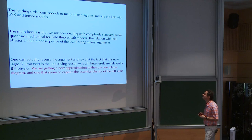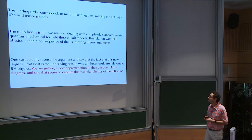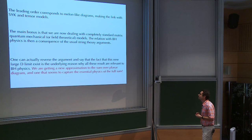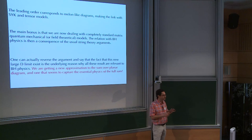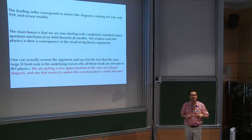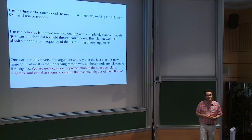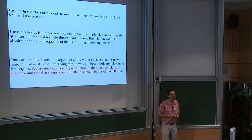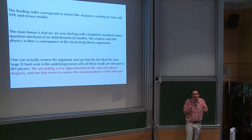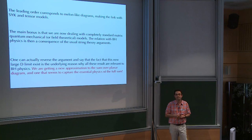The result of all these tricks is a new approximation to the sum of planar diagrams associated with large D, which contains much more diagrams than what you would get in a vector model-like large D. The new diagrams are melons or generalized melons, which makes the link with SYK and tensor models. This is a third way to get the same general structure of melons or generalized melons in a systematic expansion at large D for matrix models.